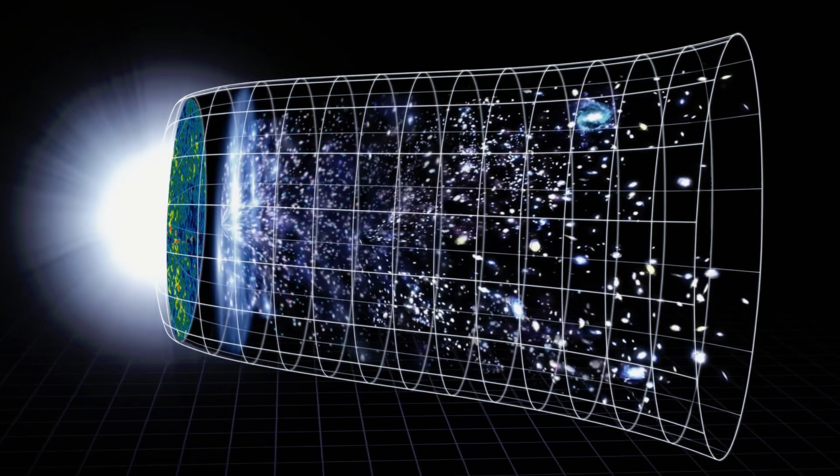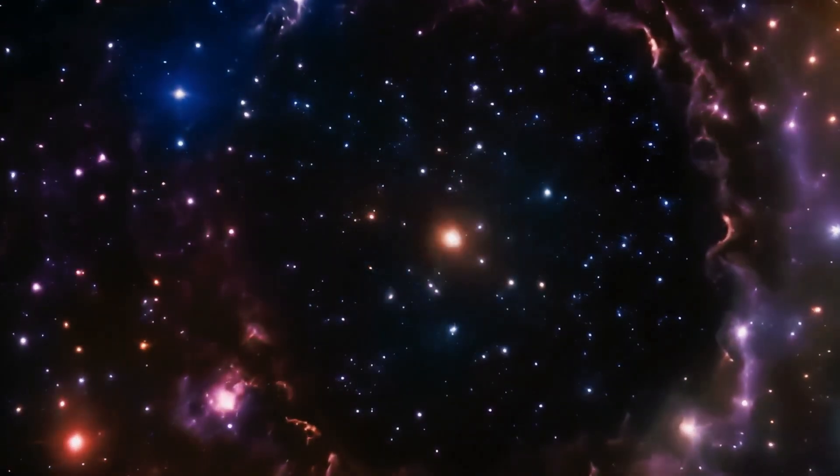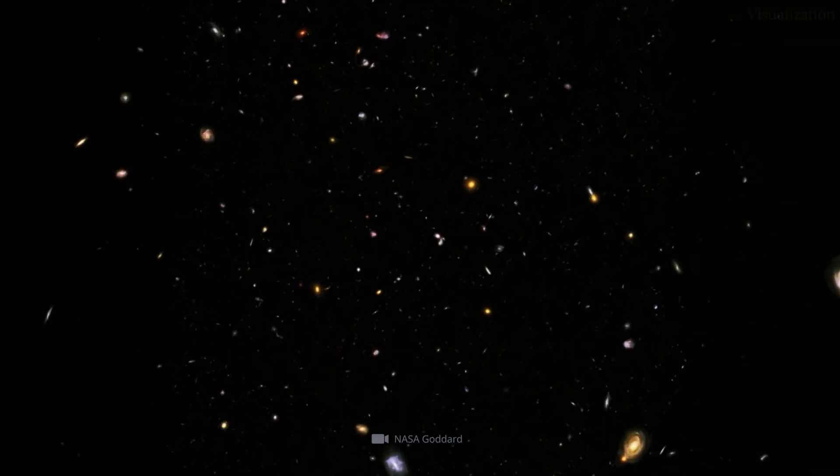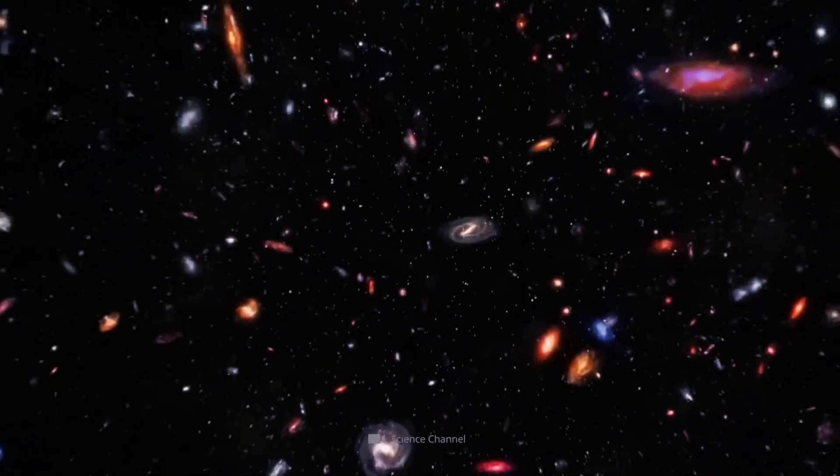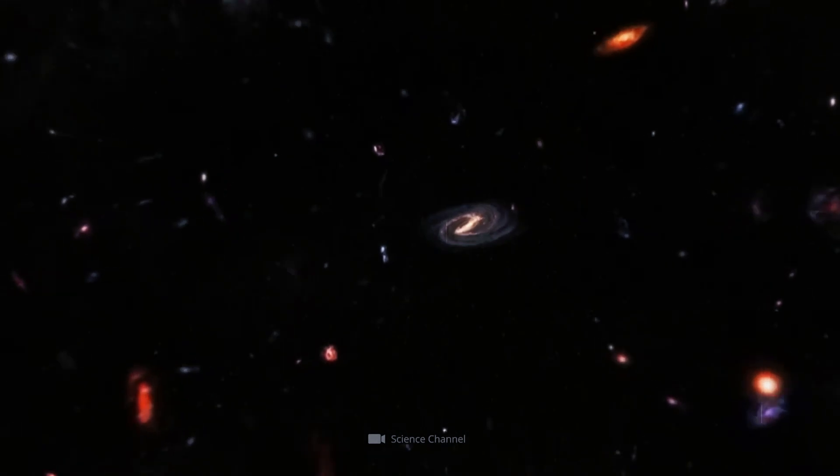According to the standard model of the universe, the cosmos after the Big Bang was simple. Primitive galaxies, small and chaotic, slowly merging and evolving over billions of years into the massive spiral and elliptical galaxies we see today.